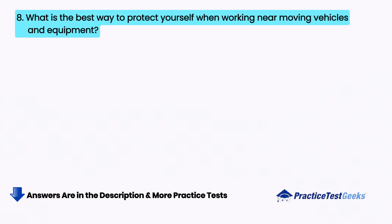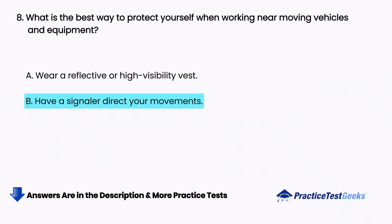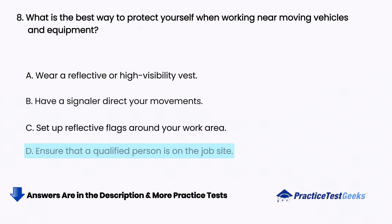What is the best way to protect yourself when working near moving vehicles and equipment? A. Wear a reflective or high-visibility vest, B. Have a signaler direct your movements, C. Set up reflective flags around your work area, D. Ensure that a qualified person is on the job site.